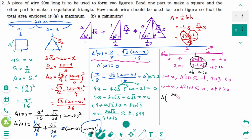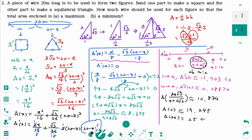A(80√3 over (9 + 4√3)) ≈ 10.874. Checking endpoints: A(0) ≈ 19.245 and A(20) = 25. The maximum occurs at x = 20 meters, meaning maximum area is obtained when only a square is made without an equilateral triangle. The minimum occurs at x = 80√3 over (9 + 4√3).